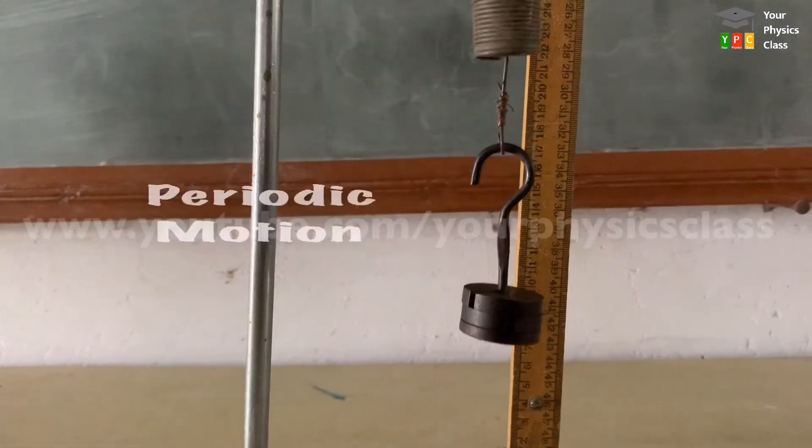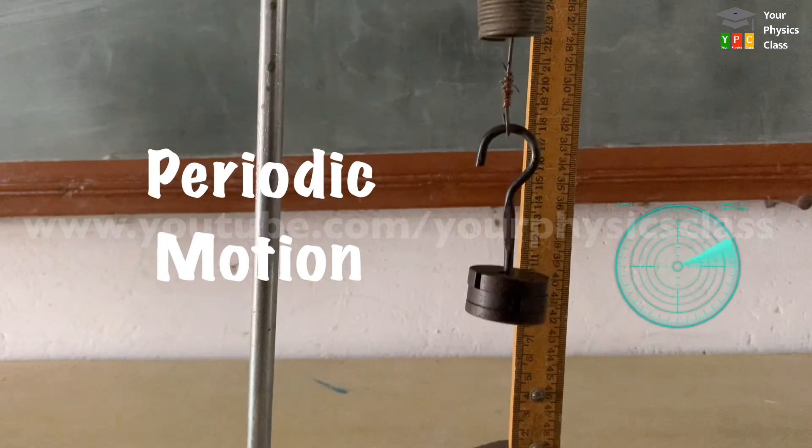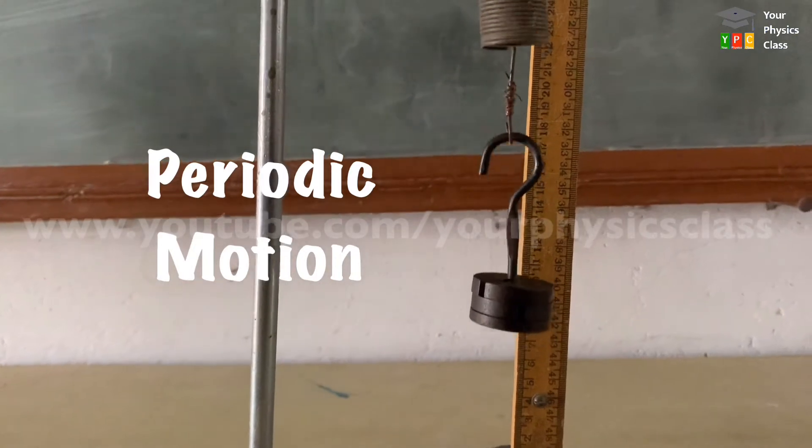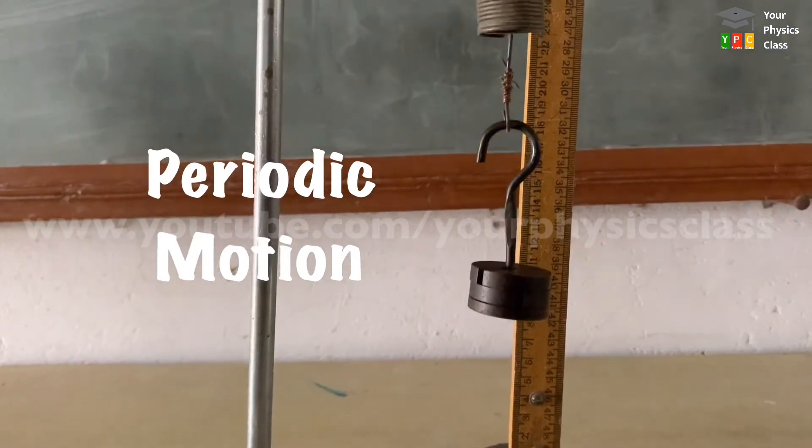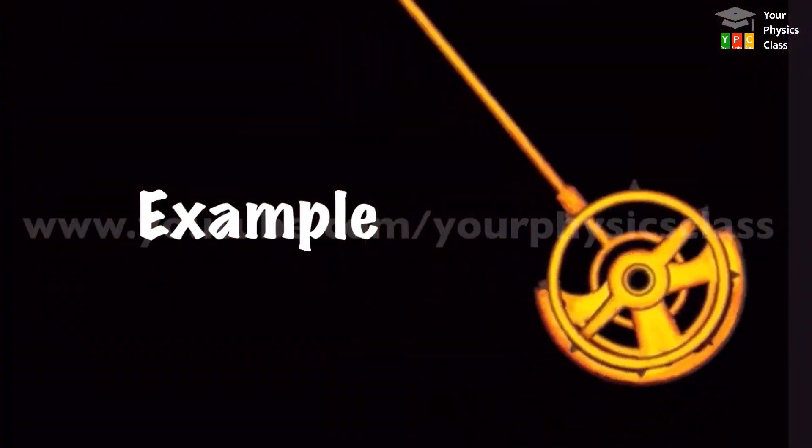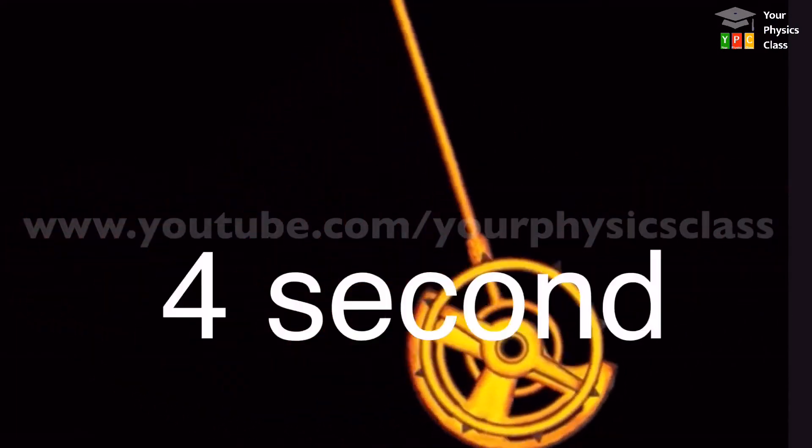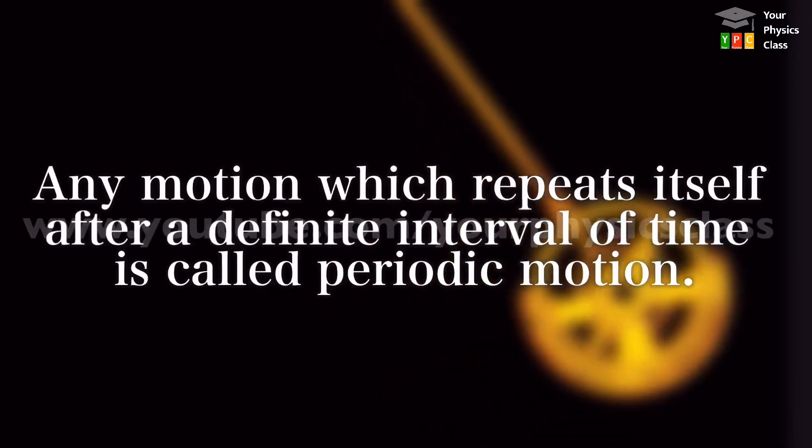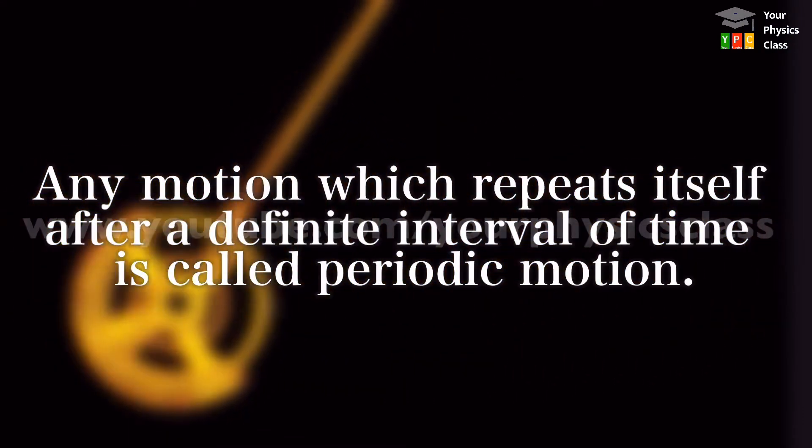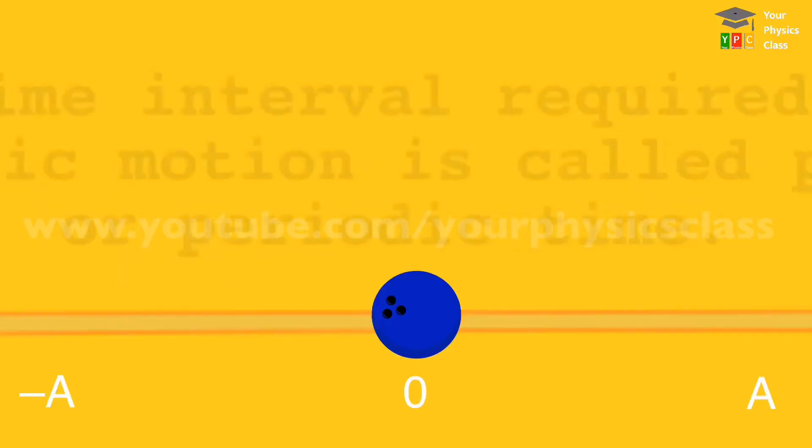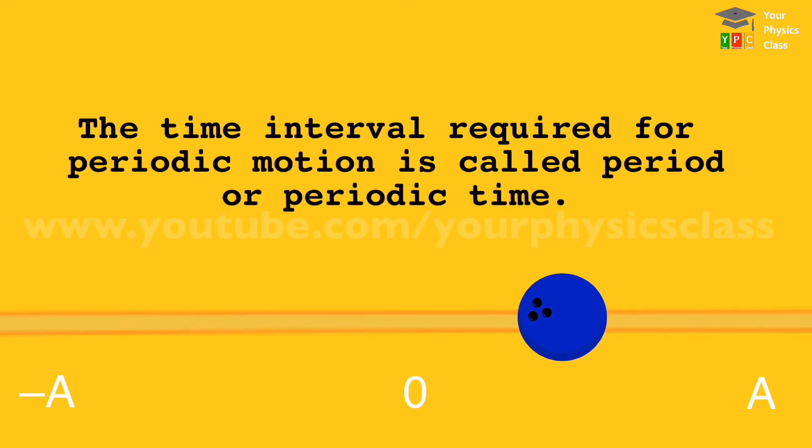This to and fro motion is periodic motion since it is repeated over the same interval of time. Jo bhi motion equal interval mein repeat hota hai, usse periodic motion kehte hai. For example, bob of seconds pendulum completes its oscillation in every two seconds. Hence, its motion is periodic. Any motion which repeats itself after a definite interval of time is called periodic motion. The time interval required for periodic motion is called period or periodic time.